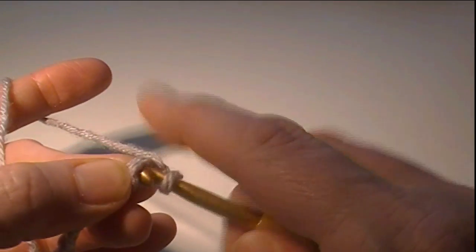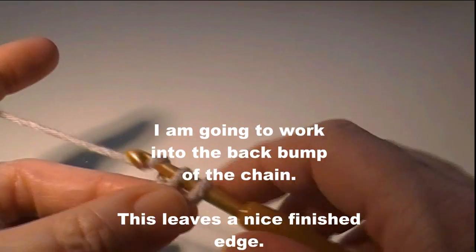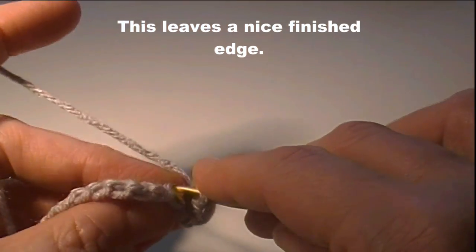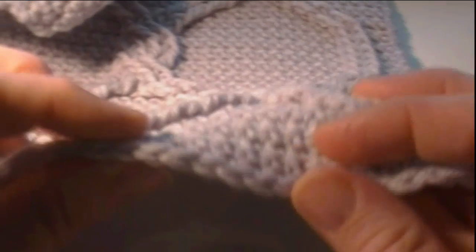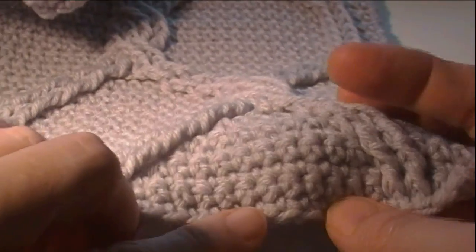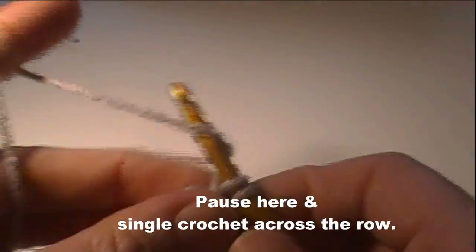I am going to work into the back bump of the chain. This is not crucial for this pattern. I just like the finished look of the edge. That's the way the edge looks when you do the back bump of the chain. It gives it just a nice little finished look. So I'm going to single crochet in each across and I'll see you at the other end.